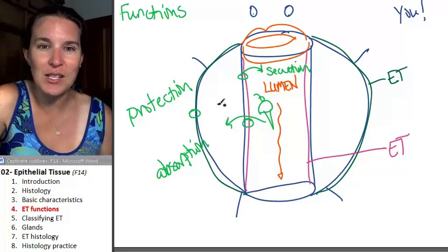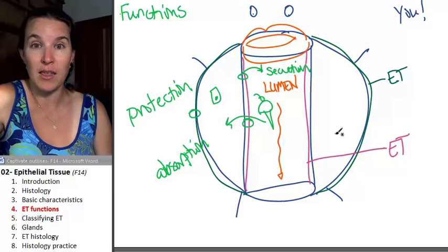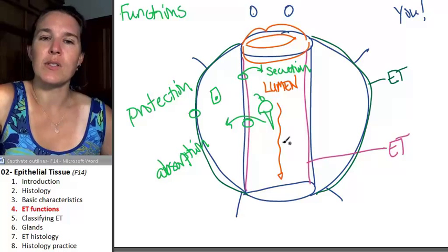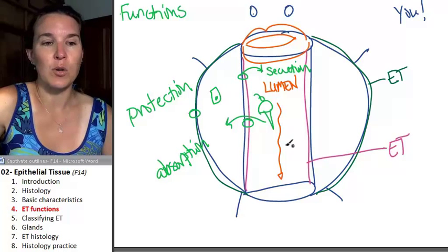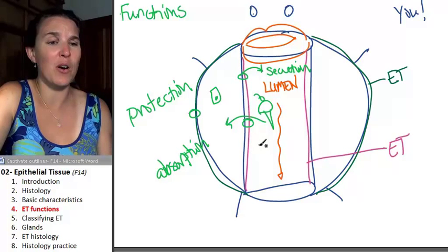Epithelial tissues are very good at absorbing the stuff in the lumen that we need and bringing it into your body so that it can go to the rest of your cells. Here's Joe's cell sitting in there, starving to death. He needs an ice cream cone like right now. So epithelial cells play a role in that absorption.